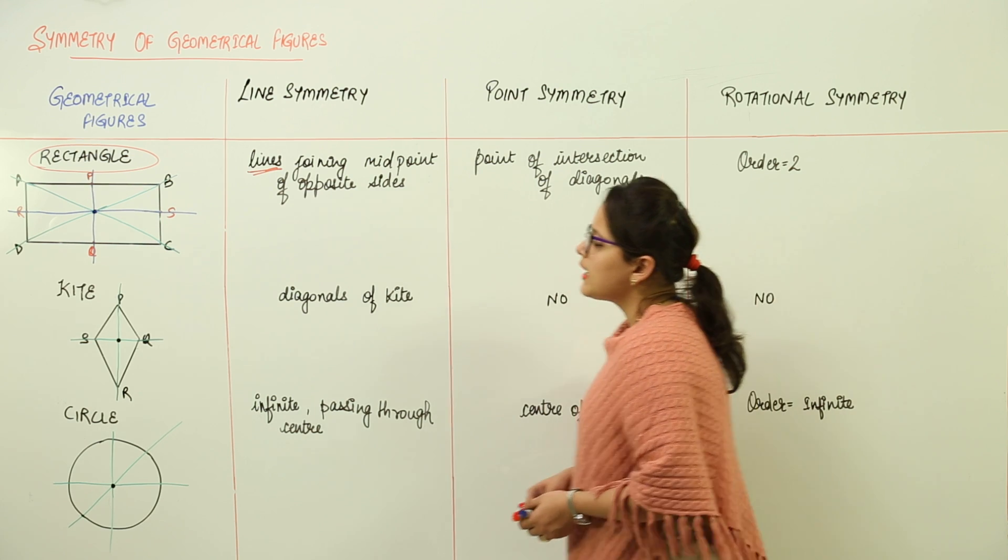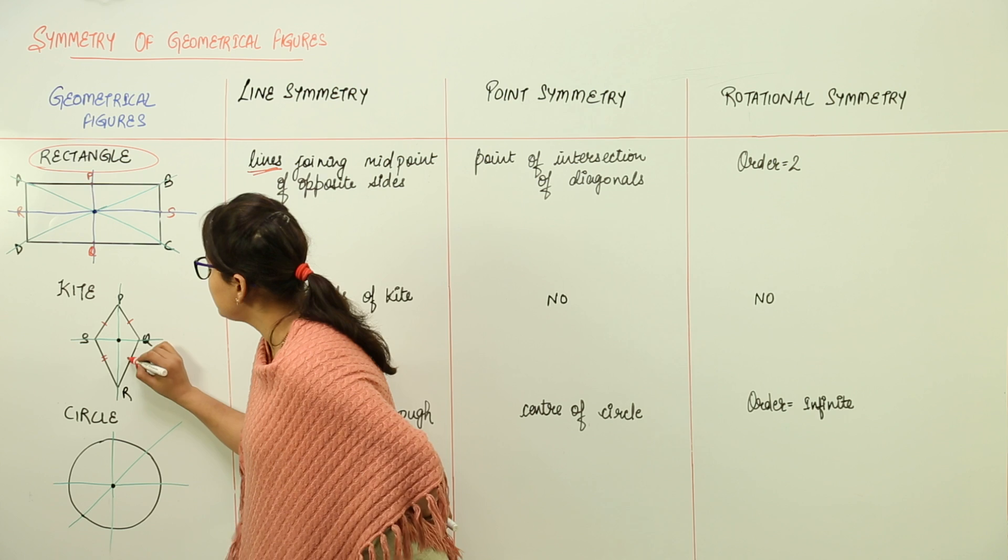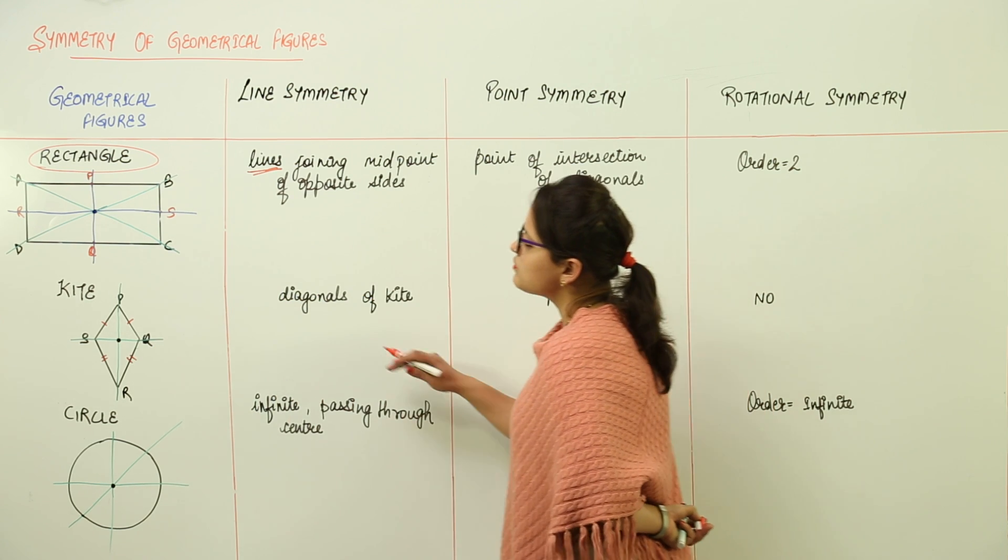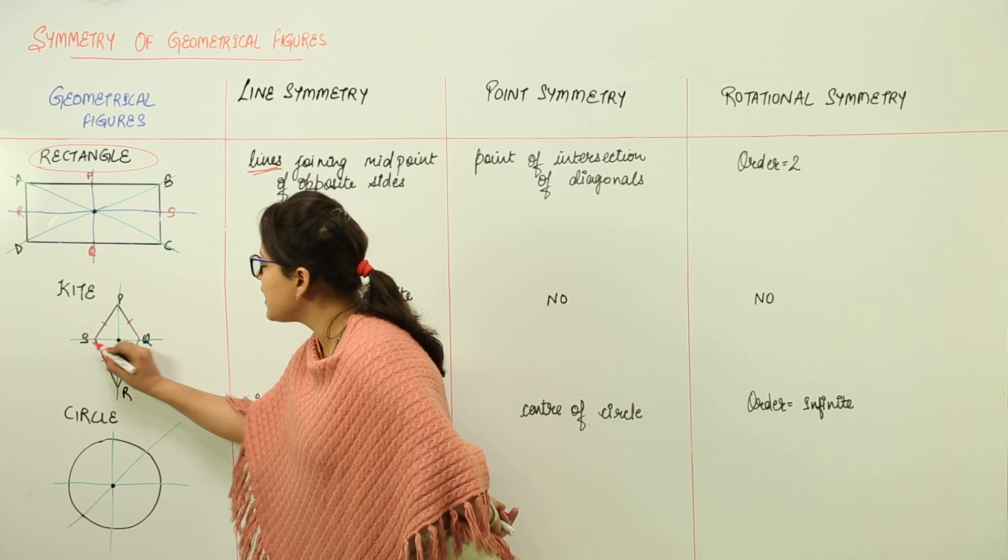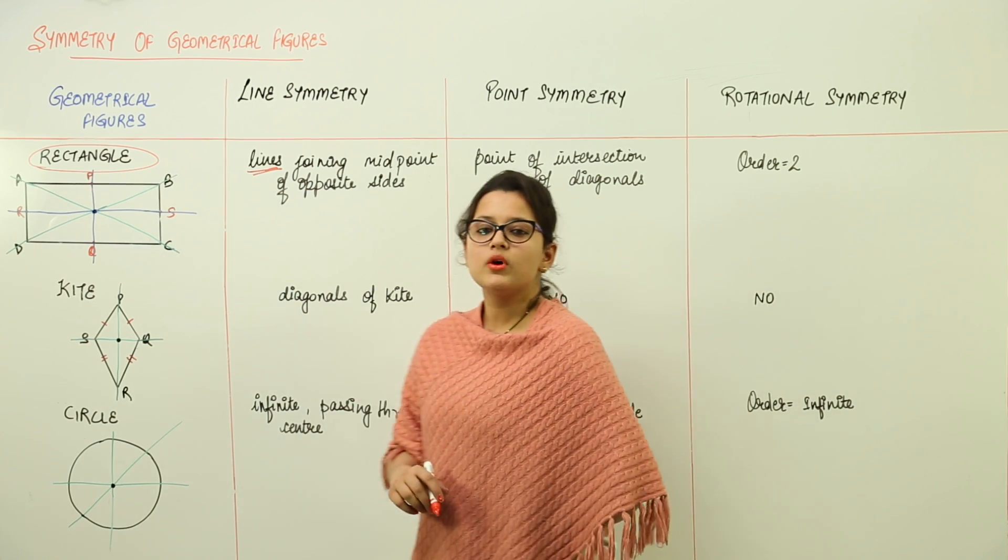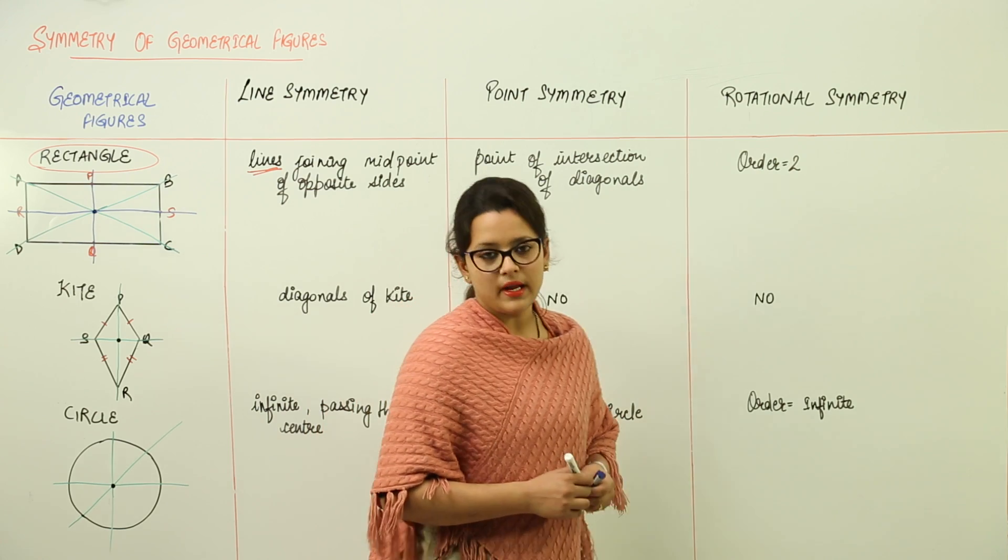Next is the kite. Kite has these sides equal. So what are the line symmetry for kites? The line symmetry for kite is the diagonals of the kite. The diagonal PR and diagonal SR represent the line symmetry for kite. What about the point symmetry and rotational symmetry? It does not exist in case of kite.